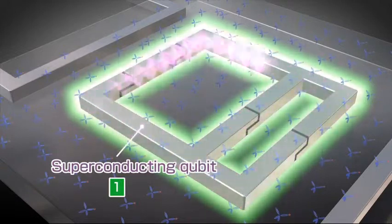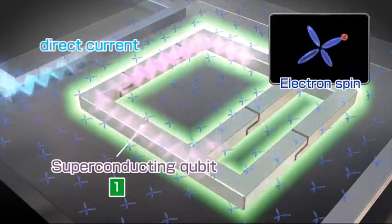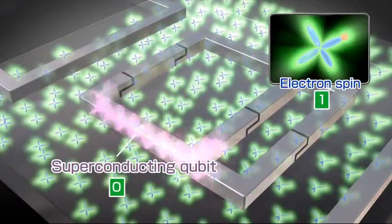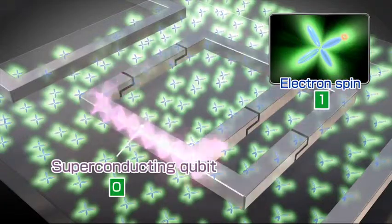When a direct current is applied to the control line, the qubit and the electron spins in diamond begin to resonate. This causes the energy to move from the qubit to the spins and the state of the spins changes to one.